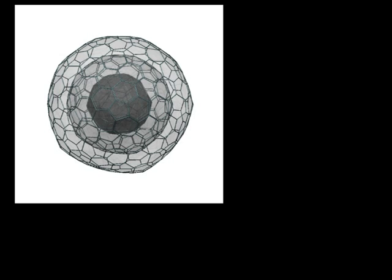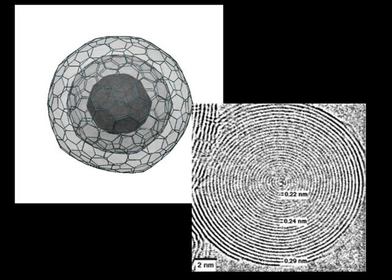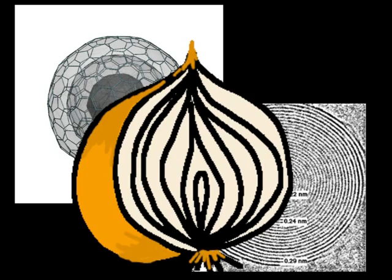Different sized fullerenes, one inside the other like Russian dolls, are known as onions, because they resemble the vegetable in shape and number of layers.